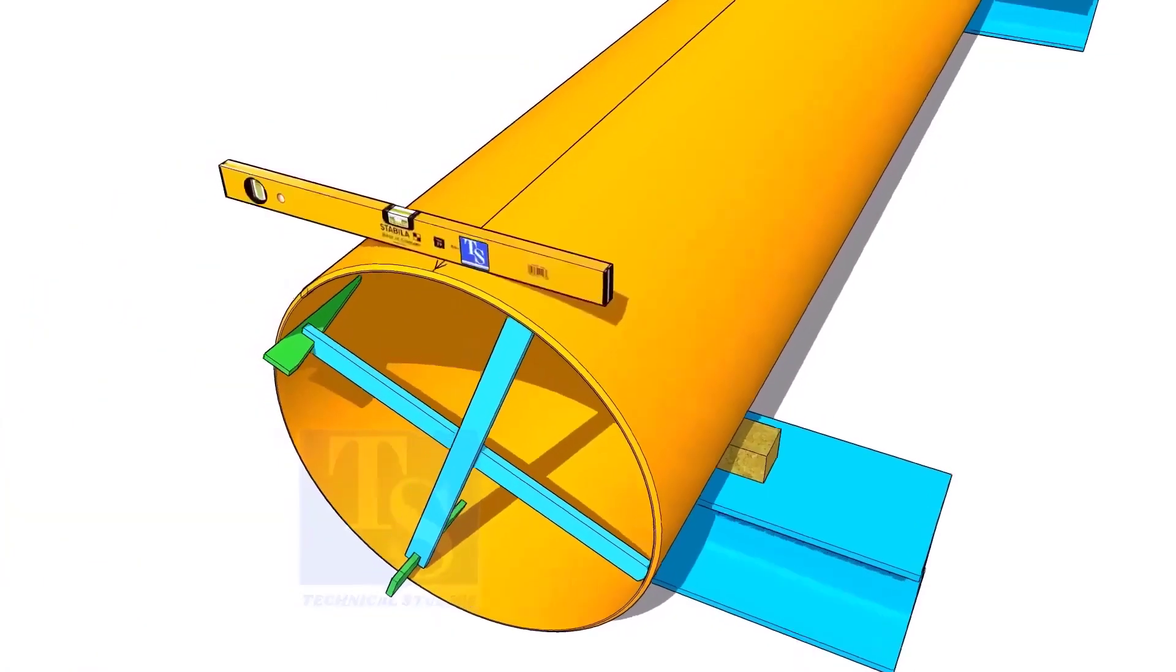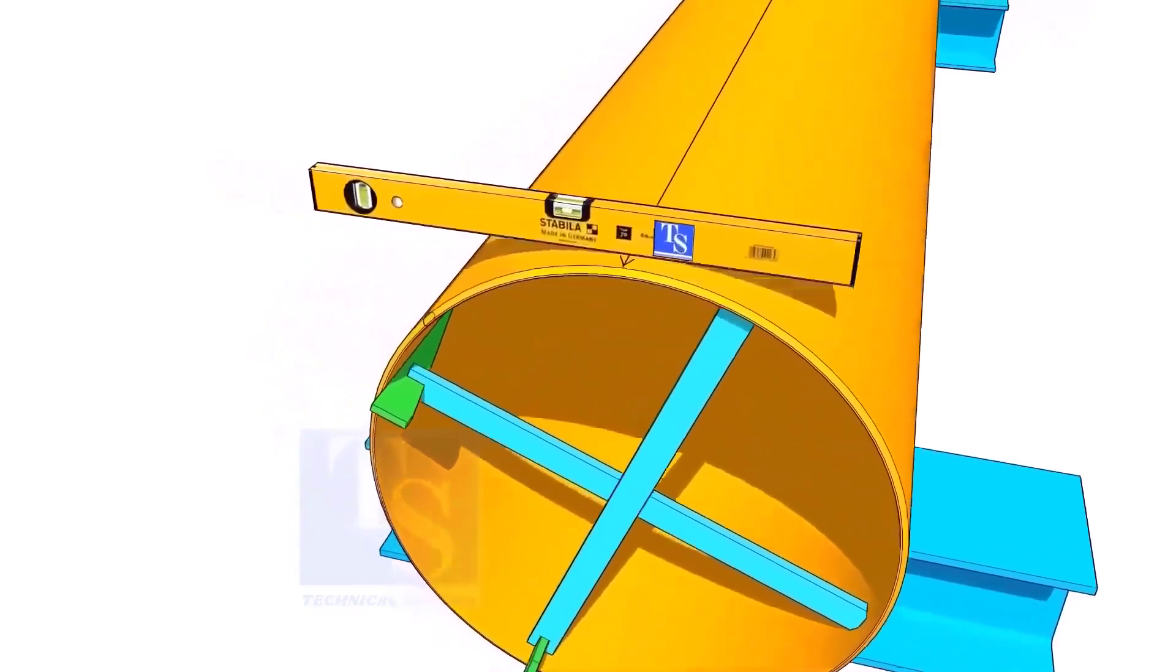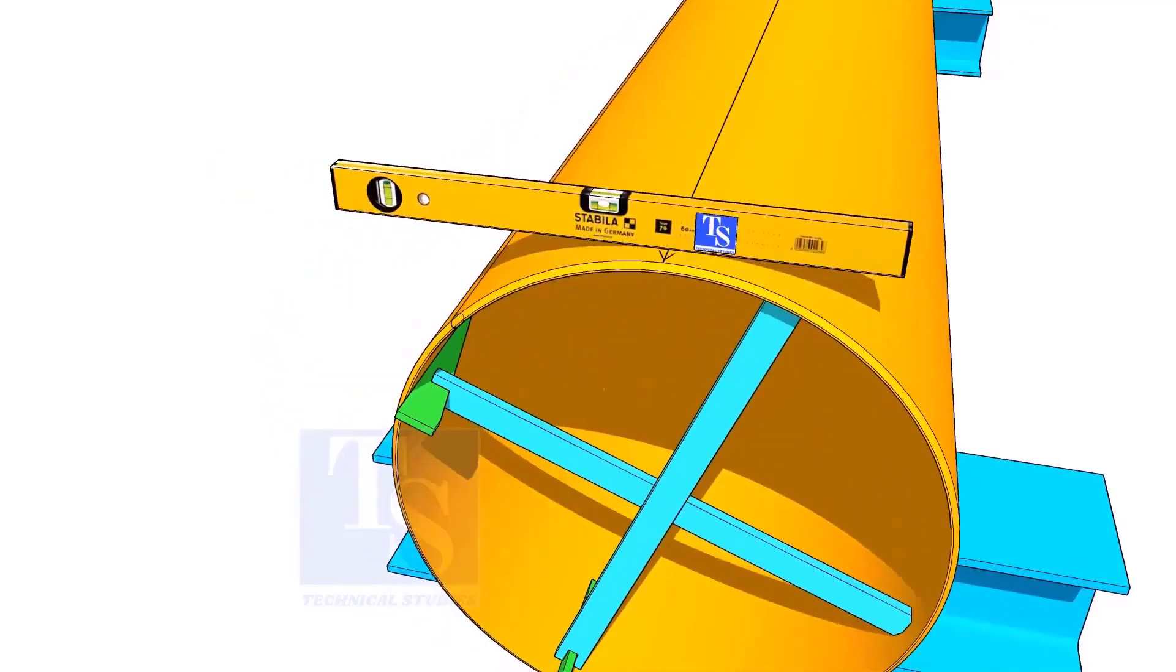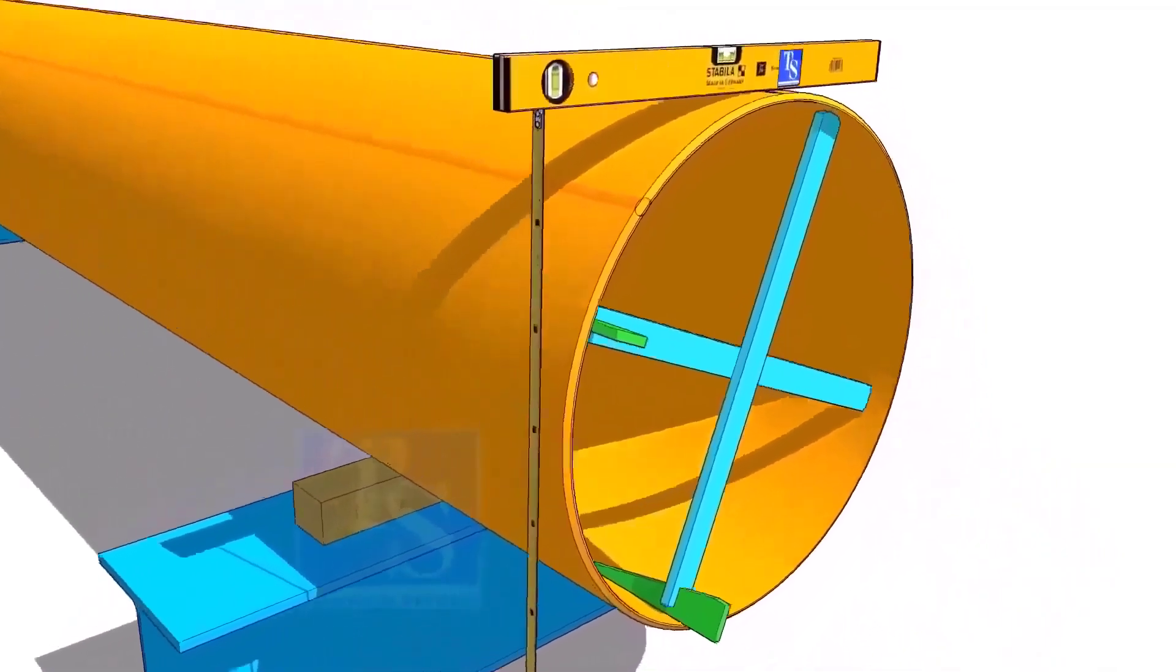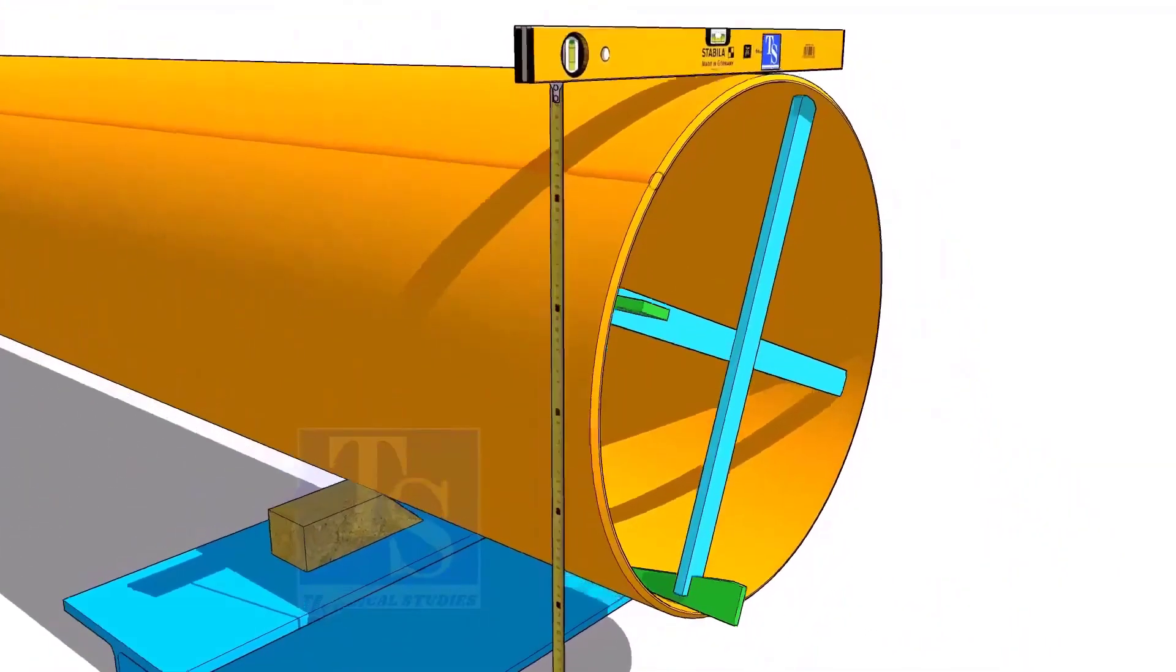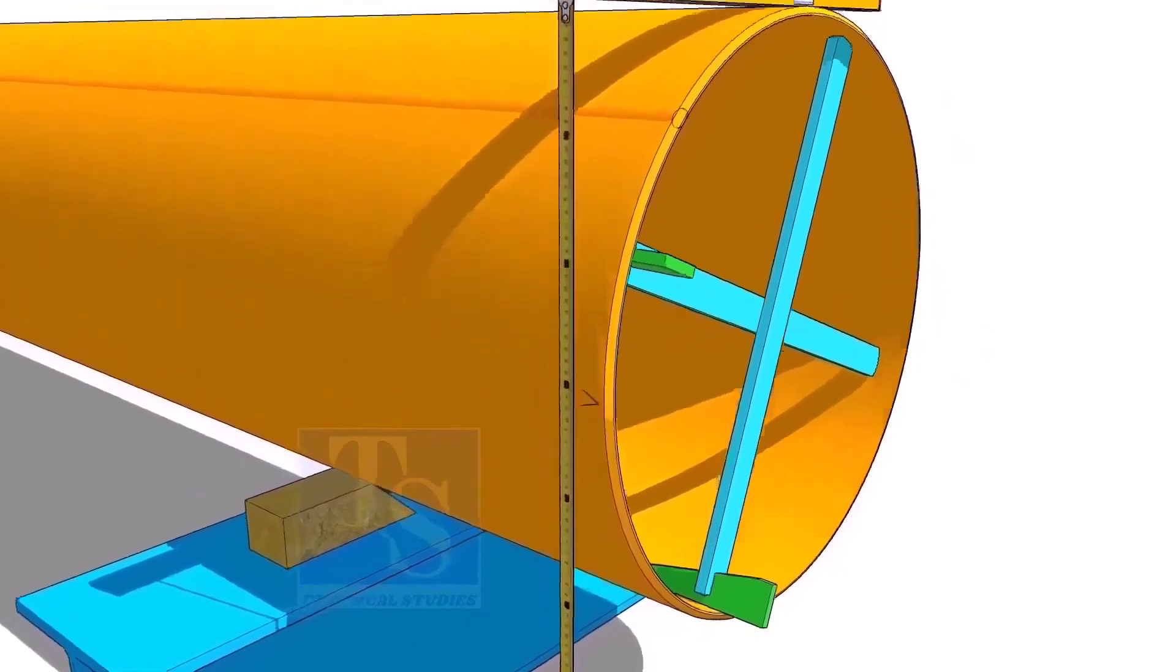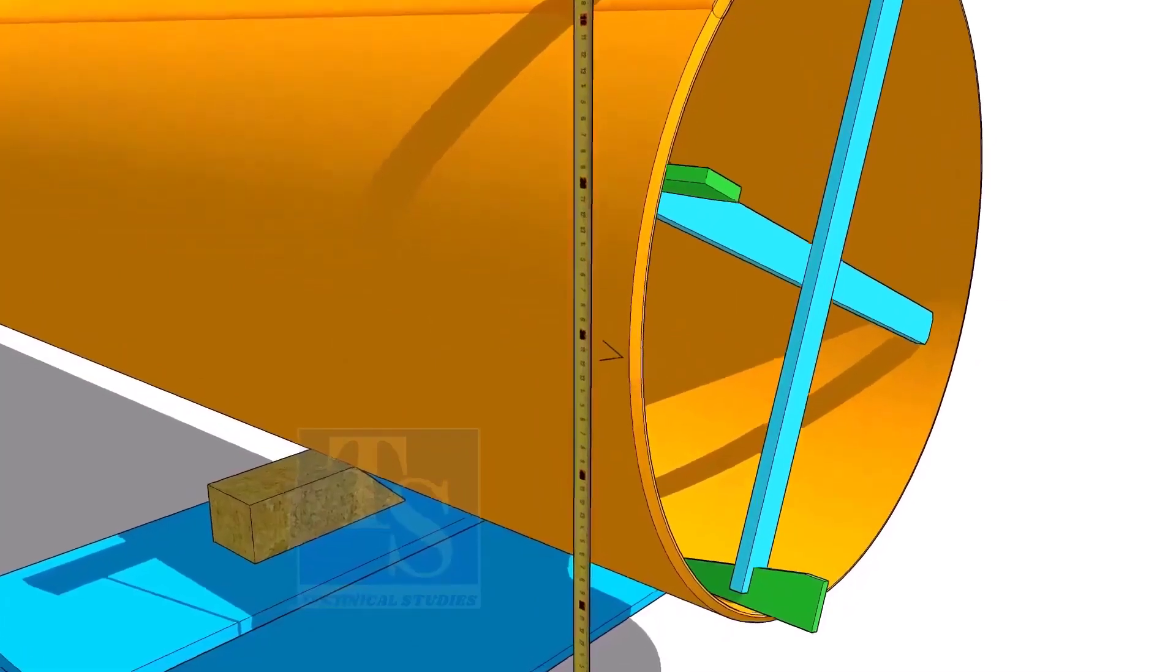Another method to mark the center line is, hold the level bottle horizontal and mark half OD on the side of the pipe. The advantage of this method is you can mark two opposite center lines at the same time.